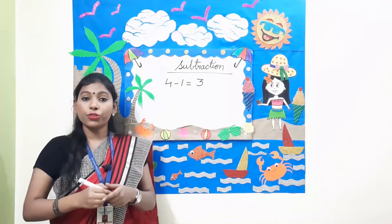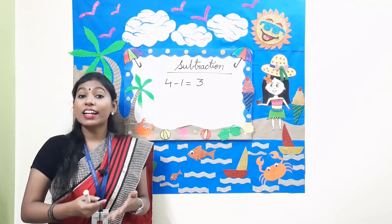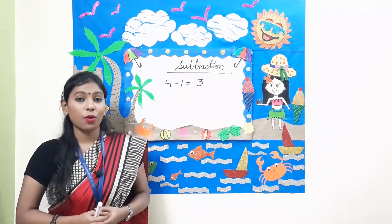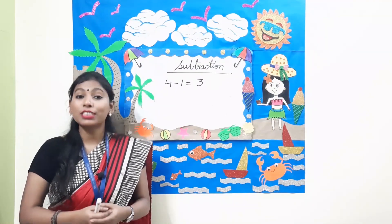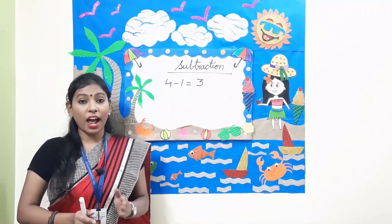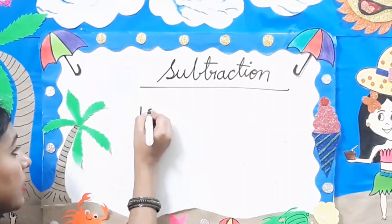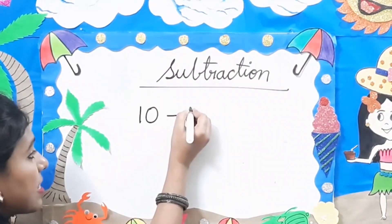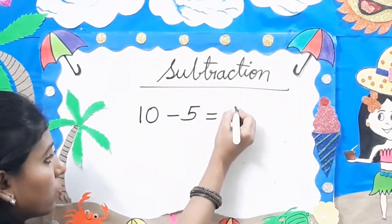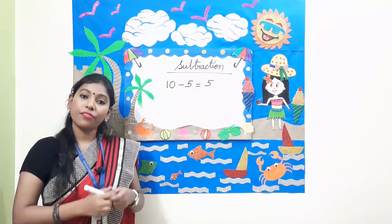So you have 3 mangoes left with you. Now coming to the next question: you have to take away 5 from 10. Take away means you have to subtract. So 10 minus 5 is equal to 5. The answer is 5.